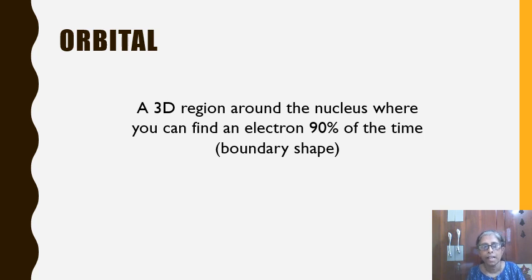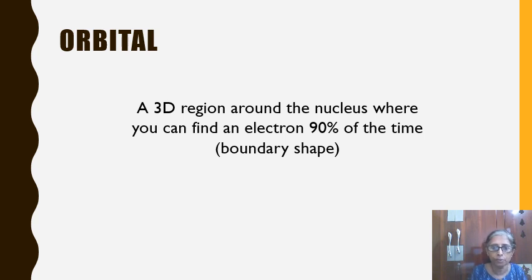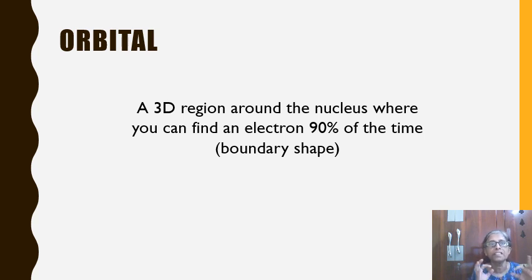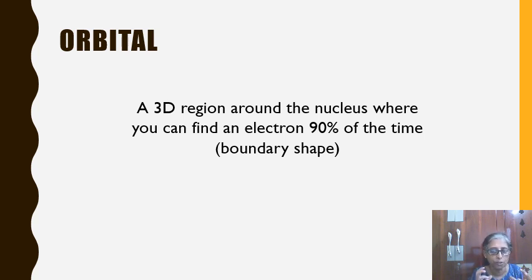When I explained S, P, D and F, I know it wasn't clear for you. You will understand that only if you learn the word orbital. So we'll go to orbitals now. The definition of an orbital is: a 3D region around the nucleus where you can find an electron 90% of the time. It's something you need to imagine, and you will learn more about orbitals now.